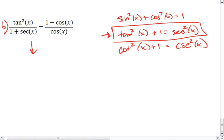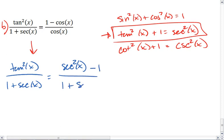We're going to plug that in for tan squared to get tan squared x over 1 plus secant x equals secant x, or secant squared x minus 1 over 1 plus secant x.